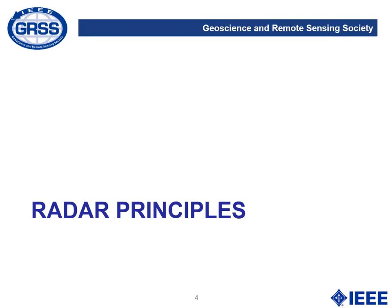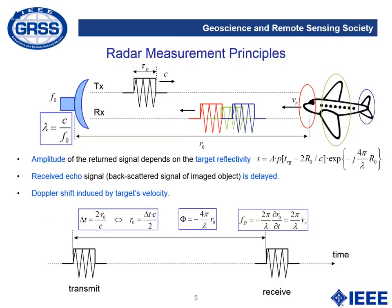Radar principles. A radar basically consists of a system that is able to transmit and receive electromagnetic pulses. In this case, an electromagnetic pulse is transmitted by the radar. It travels at the speed of light towards the target and is reflected back to the radar by the different features of the target. The target is a plane and we can see in different colors — red, green and blue — the different contributions of the different parts of the target on the received signal.